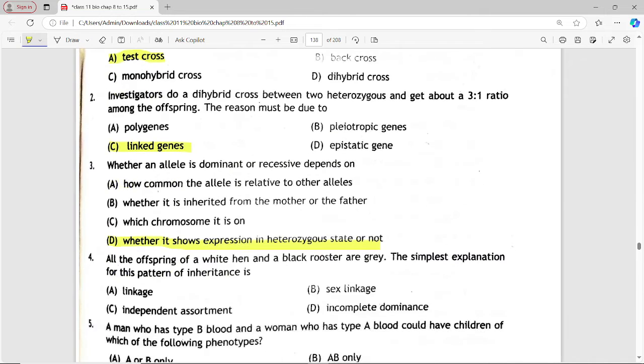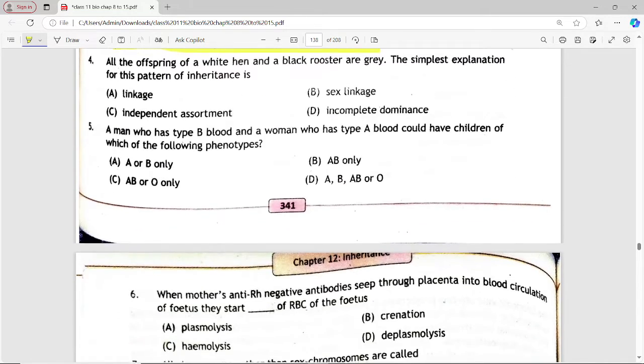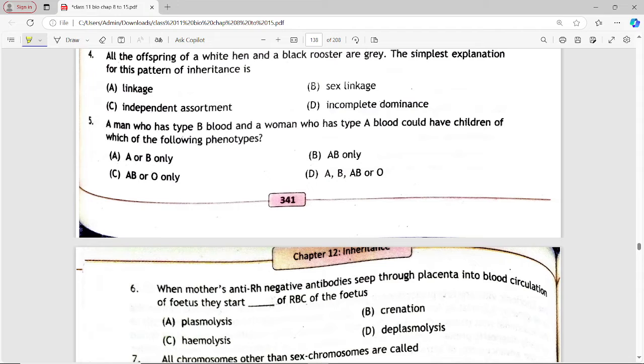Next is: All the offspring of a white hen and a black rooster are grey. The simplest explanation for this pattern of inheritance is? Options are: linkage, independent assortment, incomplete dominance, sex linkage. Answer is option D, incomplete dominance.